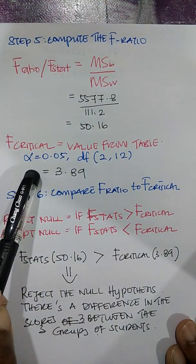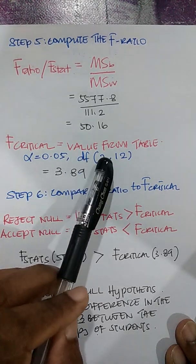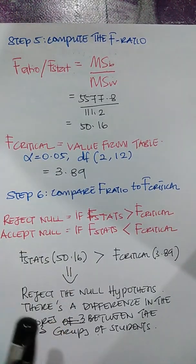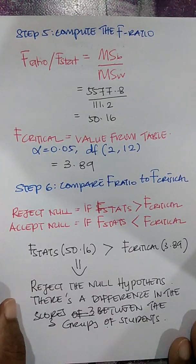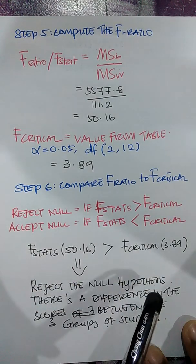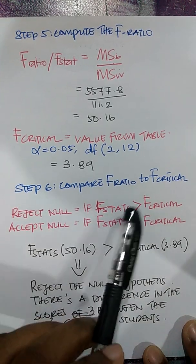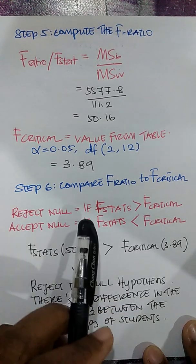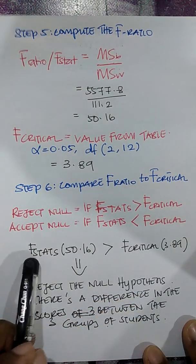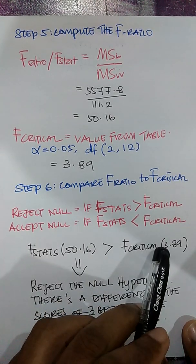For alpha 0.05 with degrees of freedom 2 (between) and 12 (within), I look up the F-distribution table. From the table at row 2 and 12, my F-critical value is 3.89. Step 6 is to compare the F-ratio to the F-critical to make a decision. I reject the null if my F-statistic is greater than my F-critical, or accept the null if the F-ratio is less than the F-critical. In this case, my F-statistic of 50.16 is definitely greater than my F-critical of 3.89.